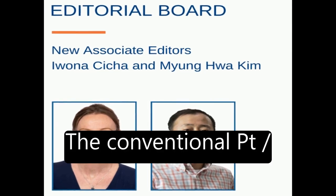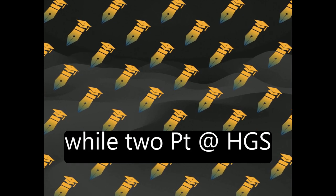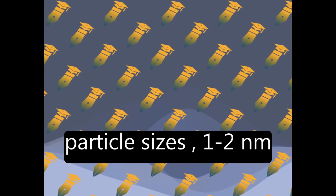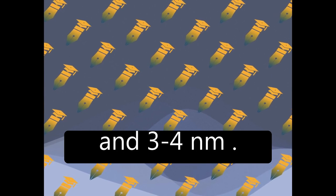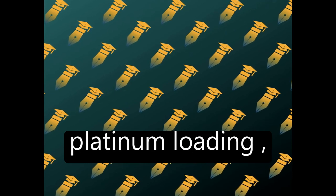The conventional Pt/Vulcan catalyst has a particle size of 3-4 nanometers, while two Pt@HGS catalysts have different particle sizes: 1-2 nanometers and 3-4 nanometers. All three materials are characterized by the same platinum loading,